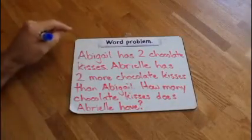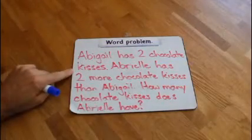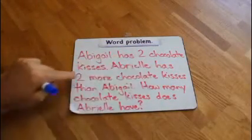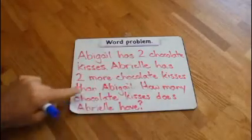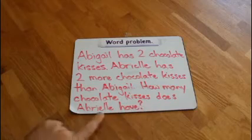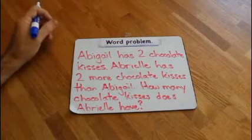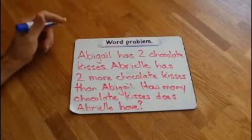Word problem. Abigail has 2 chocolate kisses. Aubrielle has 2 more chocolate kisses than Abigail. How many chocolate kisses does Aubrielle have? Okay. Do your mental math. But let's get our information here.